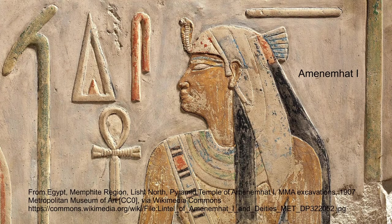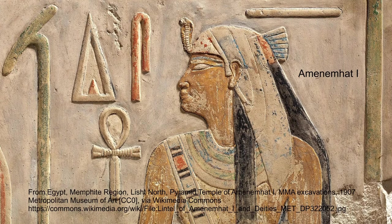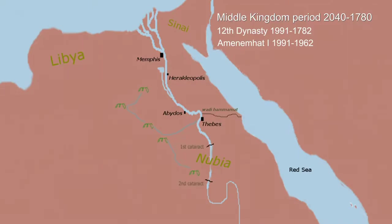Amenemhat reigned about 30 years, and what he is most noted for is that he set up a co-regency with his son — in his 20th year, he made his son co-regent king along with him. His son served like a general in the army, leading the military in a campaign while the father stayed home in the palace. While he was out on campaign, there was a coup in the palace.